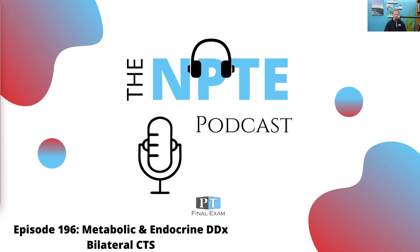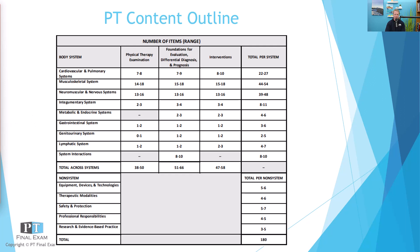Today, as we're going through the FSBPT content outline, we are down to the metabolic and endocrine system. On the FSBPT's published content outline, there's somewhere between four and six questions related to the metabolic and endocrine system. This covers primarily differential diagnosis, evaluation and prognosis, as well as interventions. This would include thyroid disorders, parathyroid hormones, and classic metabolic diseases including diabetes. Primarily the questions in this section will be related to differential diagnosis, differentiating similar conditions, and also interventions.